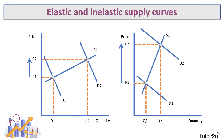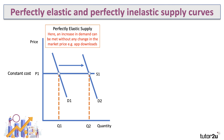In contrast, with an inelastic supply curve, a big increase in demand results in only a limited increase in output from Q1 to Q2. When there's a big rise in demand and supply is inelastic, what tends to happen is a significant increase in the market price rather than a large increase in the quantity bought and sold.